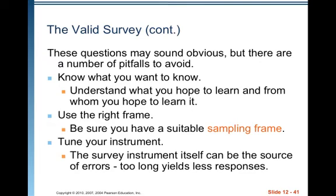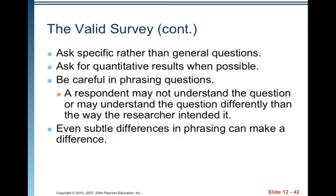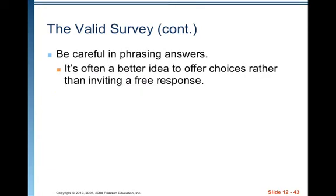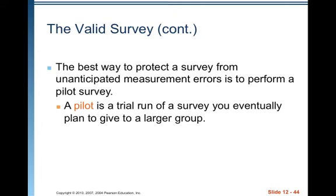These questions may sound obvious, but there are pitfalls to avoid. Know what you want to know — understand what you hope to learn and from whom. Use the right frame — be sure to have a suitable sampling frame. Tune your instrument — the survey itself can be a source of errors; too long yields fewer responses. Ask specific rather than general questions, ask for quantitative results when possible, be careful in phrasing questions since a respondent may understand it differently than the researcher intended. Even subtle differences in phrasing can make a difference. Offer choices rather than inviting a free response. The best way to protect a survey from unanticipated measurement errors is to perform a pilot survey — a trial run before giving it to a larger group.